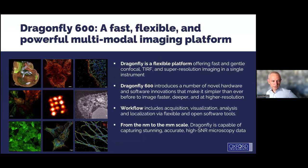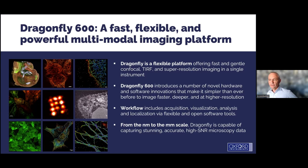In conclusion, the new Dragonfly 600 is a very flexible platform with multi-modalities: confocal microscopy, wide field, super-resolution, B-TIRF. The workflow from acquisition to image analysis, including Imaris, is very straightforward — same format, no conversion needed — and with this we can image from nanometers to millimeters.